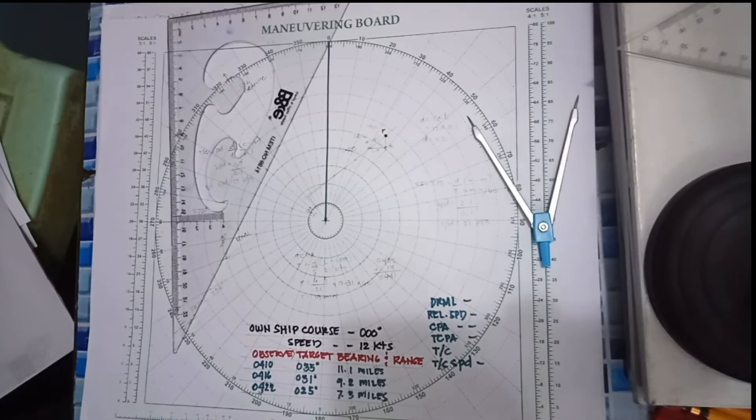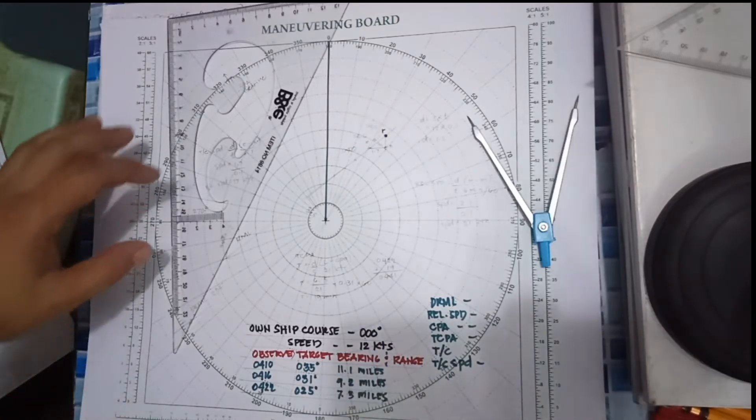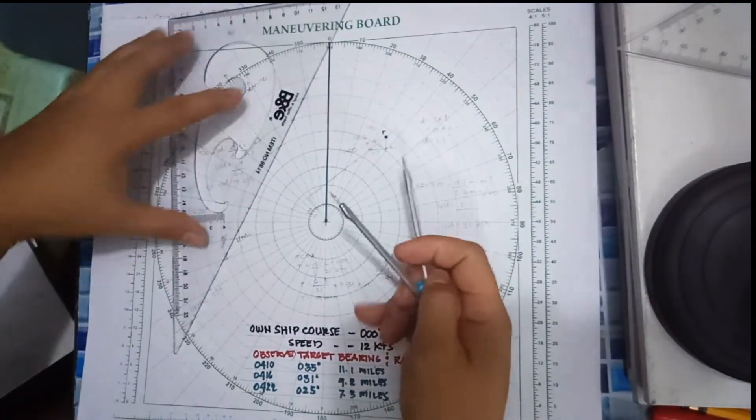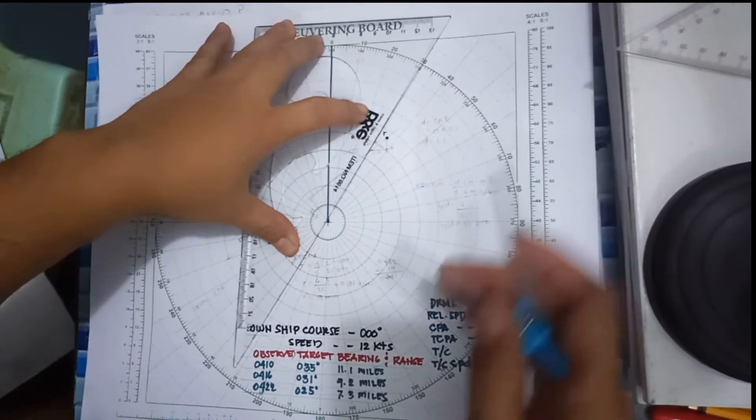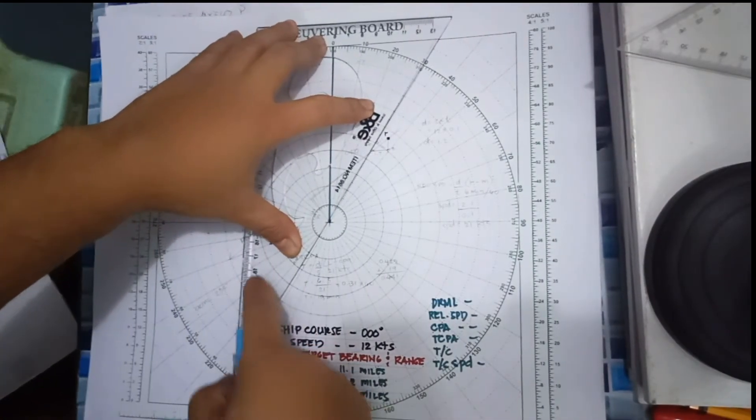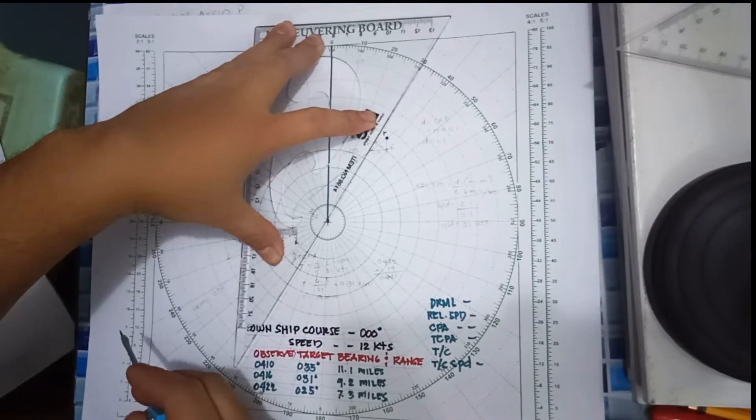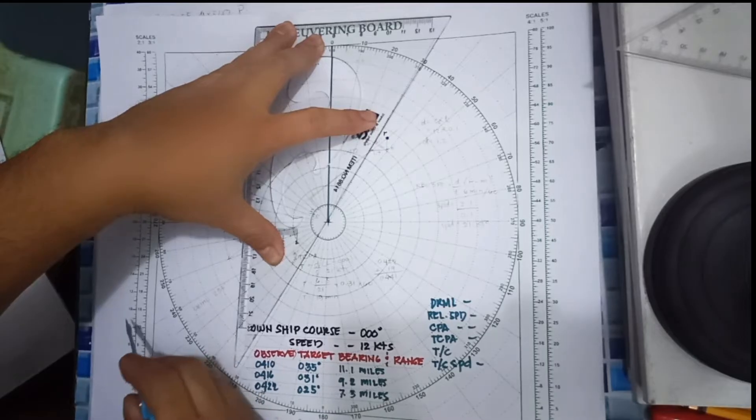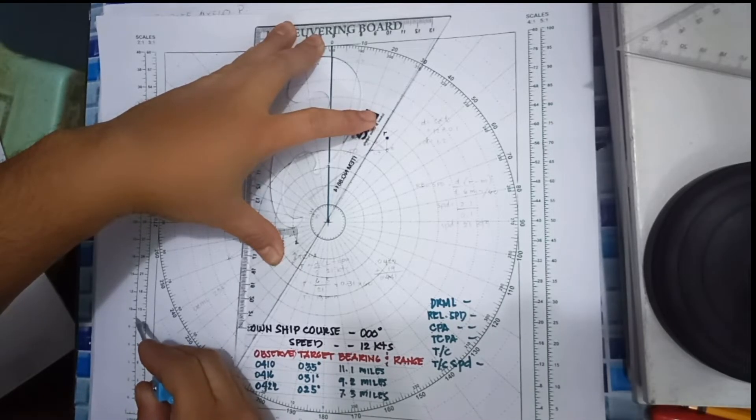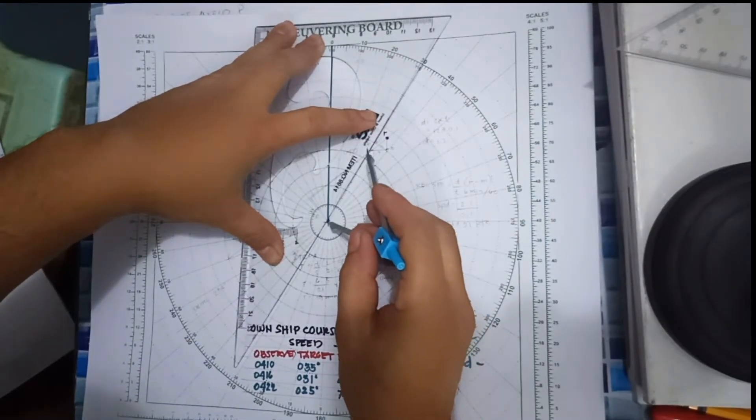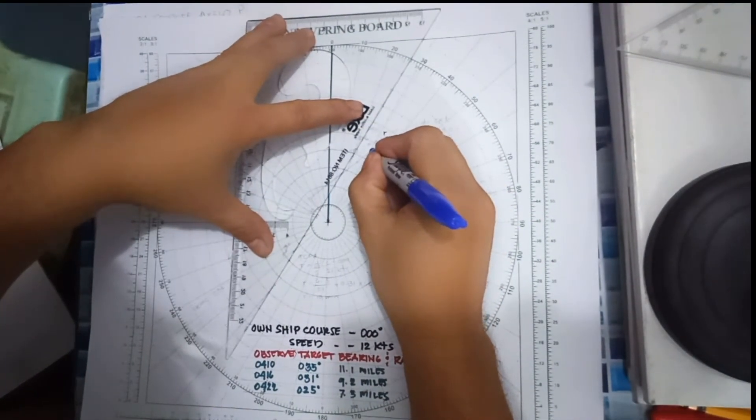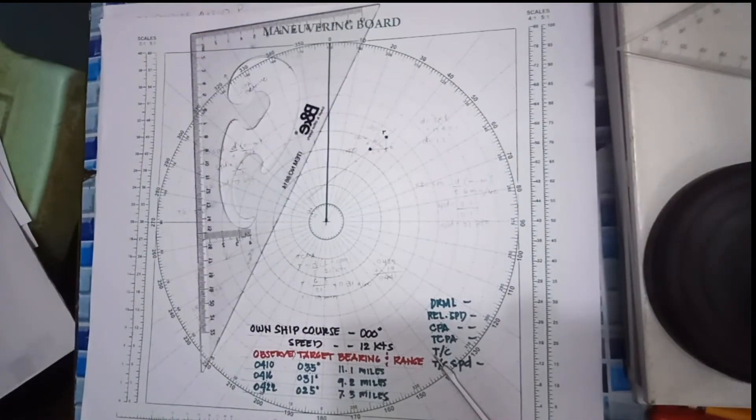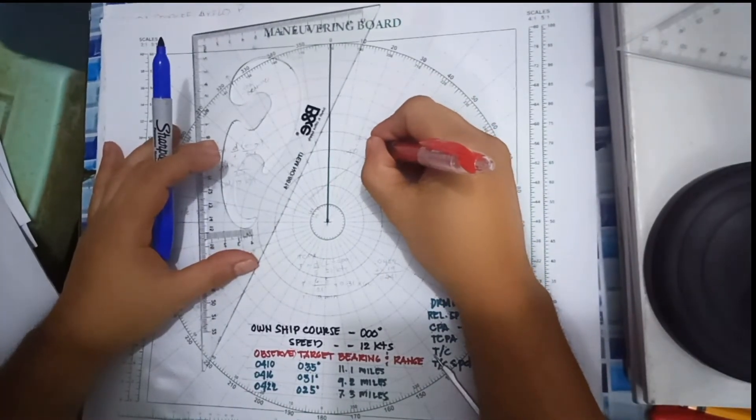Then the next bearing is 031 degrees, 9.2 miles. By the way guys, we are using the 2 to 1 scale. So 9.2 miles, it's here. So the second target, this will be your M.